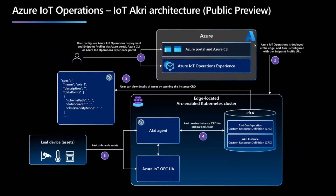So let me show you what is available right now in public preview so you can try this out. The user goes through the portal CLI or the experience portal to configure the deployment. Then Azure IoT Operations is deployed at the edge on your Arc-enabled cluster, and Acri is configured with the endpoint profile URL, which is essentially the OPC UA URL you need to connect to that asset. From here, Acri will talk with the Azure IoT OPC UA broker and work together to onboard these assets. Acri will create the instance CRD for this onboarded asset, and the user can open the instance CRD file to view the details of the asset, like what it is and what kind of schema does it have.